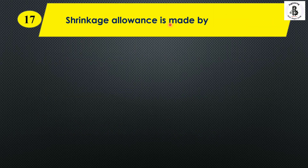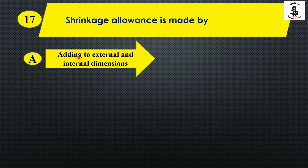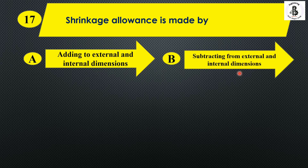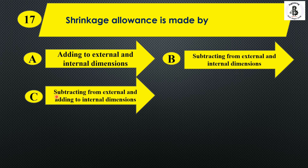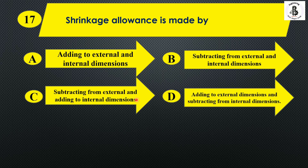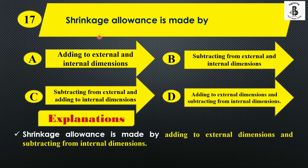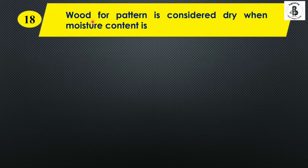The next question: shrinkage allowance is made by — option A: adding to external and internal dimensions; option B: subtracting from external and internal dimensions; option C: subtracting from external and adding to internal dimensions; option D: adding to external and subtracting from internal dimensions. Shrinkage allowance involves adding to external dimensions and subtracting from internal dimensions, so the right answer is option D.